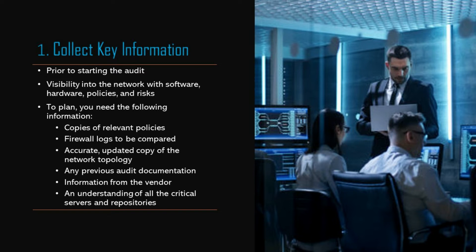Now let's get into the six steps of the firewall audit. Step one: collect key information. This is prior to the audit — there needs to be information gathered. During this time, there needs to be visibility into the network with software, hardware, policies, and risks. In order to plan the audit, we will need the following: copies of the relevant security policies, firewall logs that can be compared to the firewall rule base to find which rules are being used, an accurate and updated copy of the network and firewall topology diagrams, and any previous audit documentation including the rules, objects, and policy revisions.